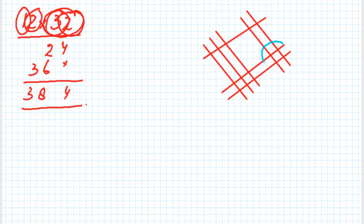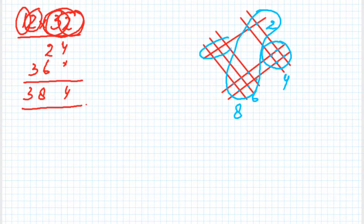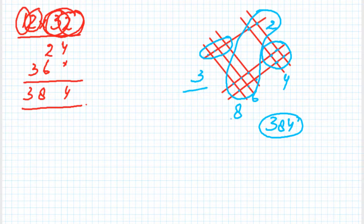Now count the number of points of intersection. On the right group: one, two — write down 4 here. In the middle group: one, two, and here one, two, three, four, five, six — add 2 and 6 to get 8. On the left group: one, two, three — so three, eight, four. 384 is the required answer. Let's take the next example.